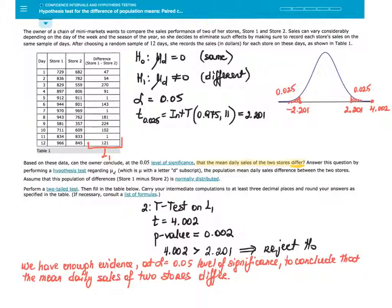The owner of a chain of mini markets wants to compare the sales performance of two of her stores, store 1 and store 2. Sales can vary considerably depending on the day of the week and the season of the year, so she decides to eliminate such effects by making sure to record each store's sales on the same sample of days. After choosing a random sample of 12 days, she records the sales in dollars for each store on these days, as shown in Table 1.